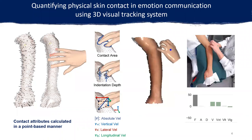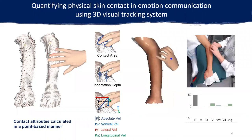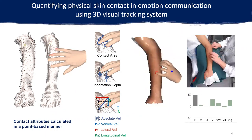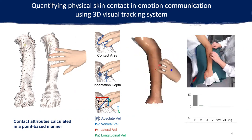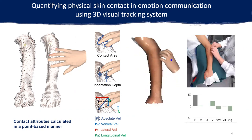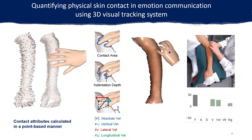We then derived the contact attributes during touch, including contact area, indentation depth, spatial hand velocity, three velocity components, and the overall contact duration.